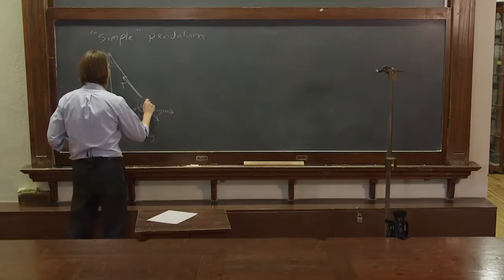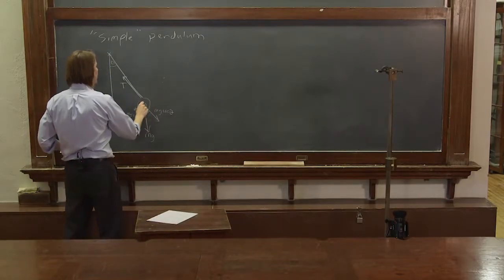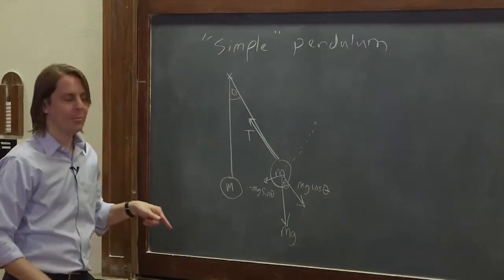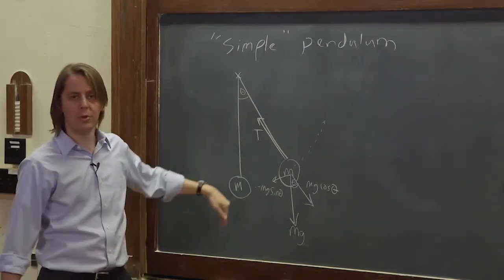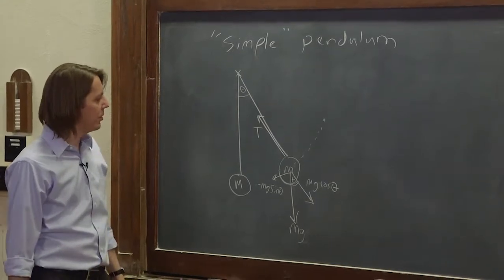So that would be something that would give you a torque for this rotational motion. And you'd think of it sort of as constrained motion along this arc. And therefore, you ignore the tension, because the tension doesn't give you a torque. The tension always pulls radial to this constrained circular motion. That's one way to go.